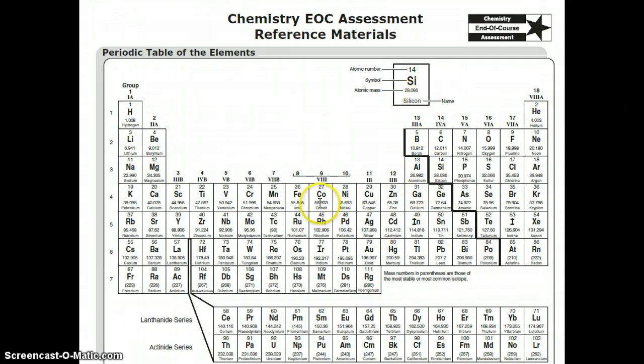So quite a bit of information in this particular periodic table. You also have your group numbers, as well as the A or B designation, as well as your period numbers, which of course correspond to your energy levels for your electron configurations.